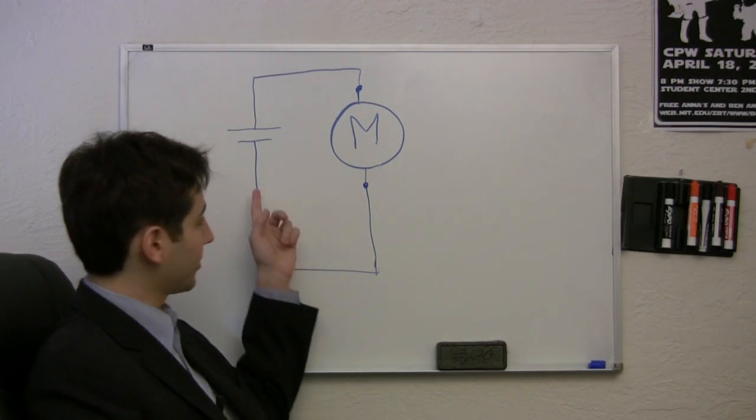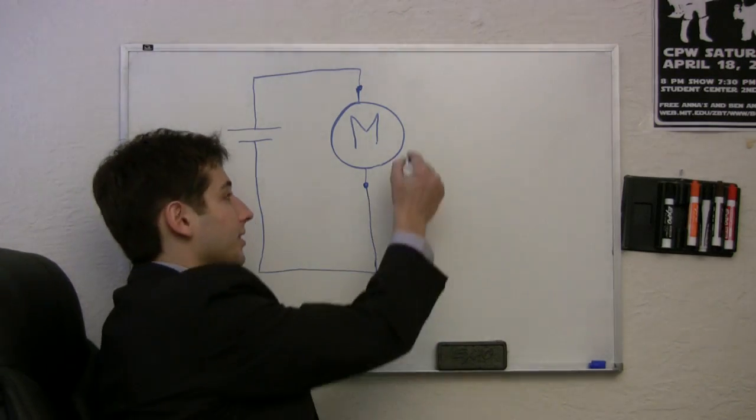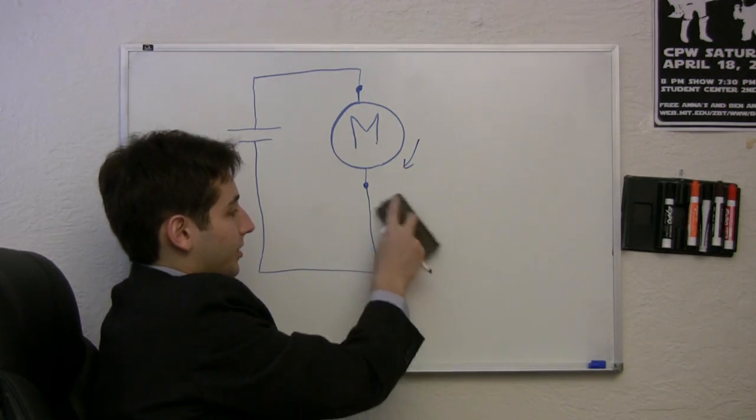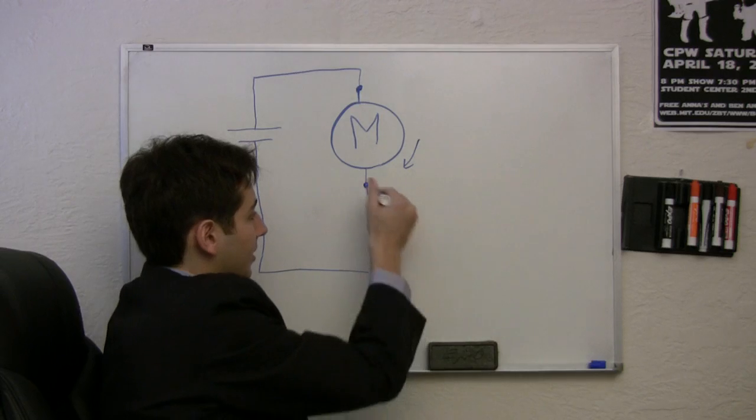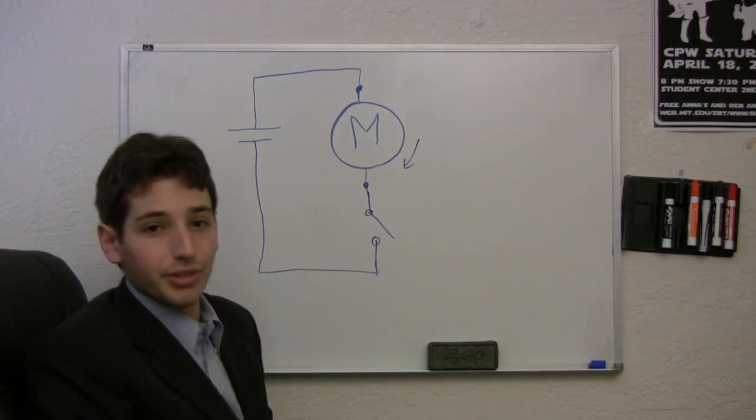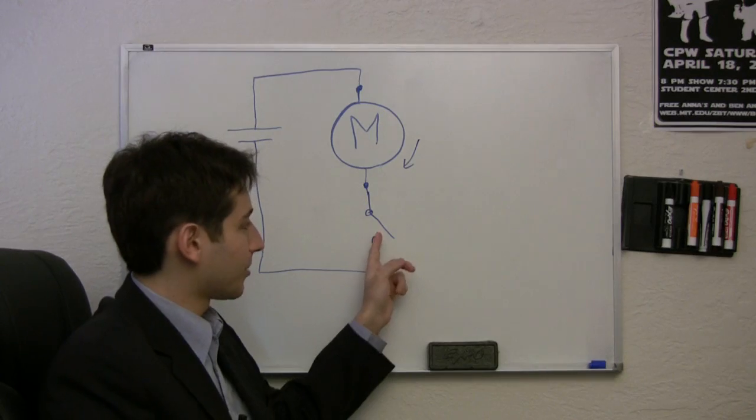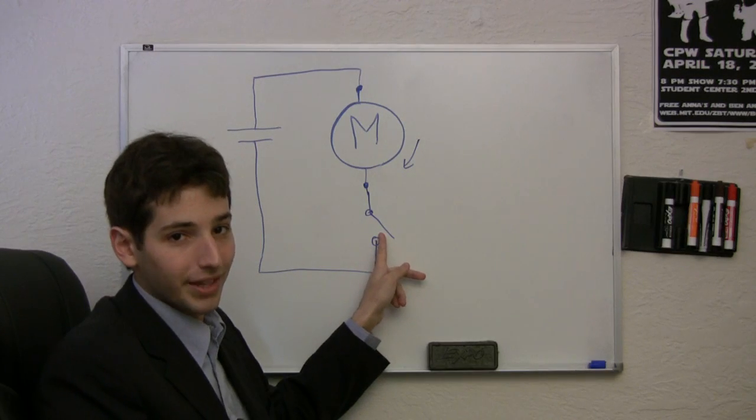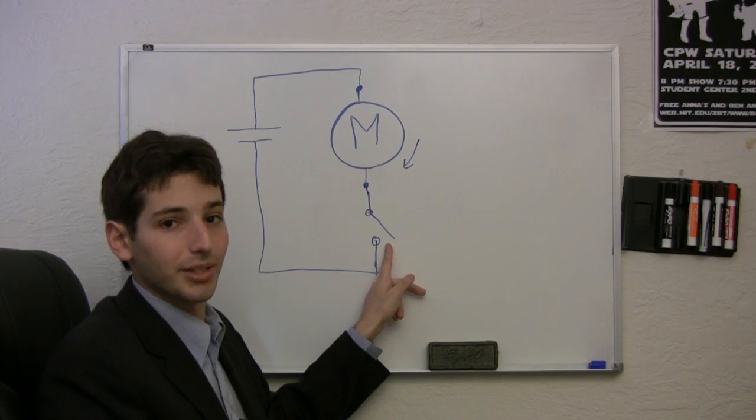If we have a motor and put a voltage across it, the motor will spin. But if we put a switch in series with the motor, we'll only be applying power when the switch is closed. Things get interesting once we let the microcontroller control the switch. Let's think about what the technical requirements are for the switch.